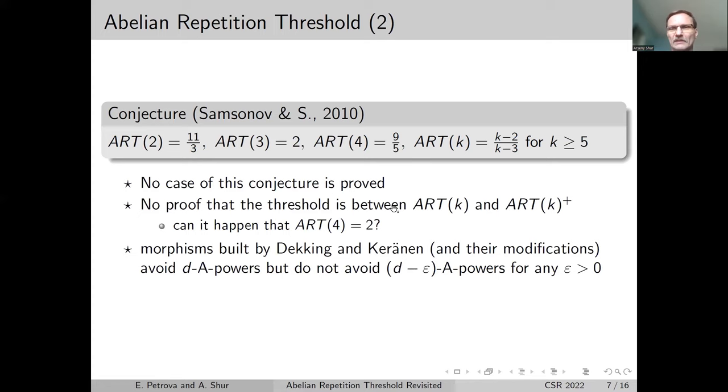The conjecture, a counterpart of Dejean's conjecture for repetition threshold, is that ART(k) is (k-2)/(k-3) for all alphabets starting from five letters, with three special cases. Up to now, no case of this conjecture is proved. It's not known whether the threshold is indeed between these two points. The infimum in the definition may or may not be reached. The constructions used by Dekking and Keränen avoid d-A-powers, but do not avoid (d-ε)-A-powers for any ε greater than zero.